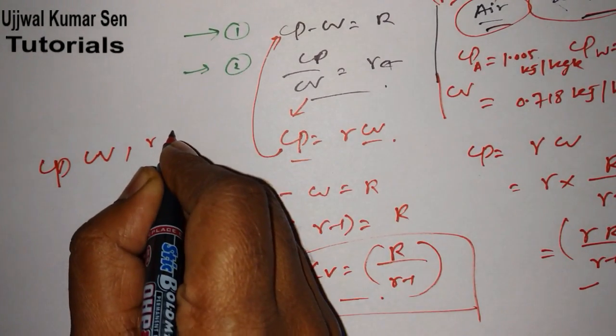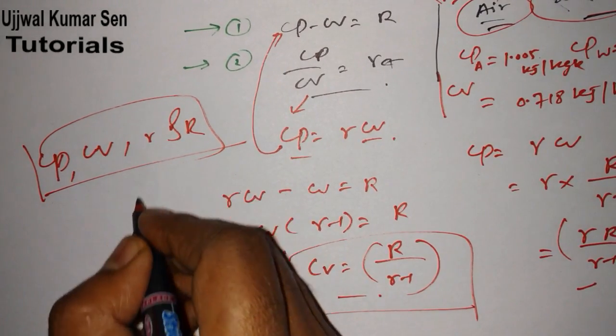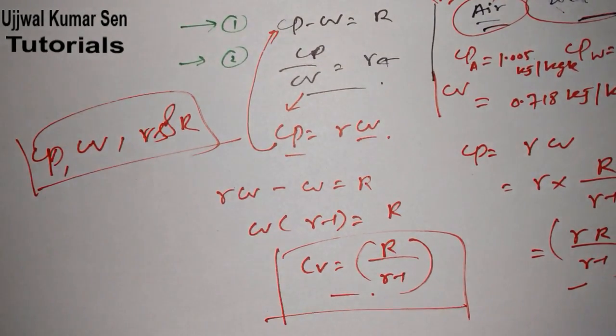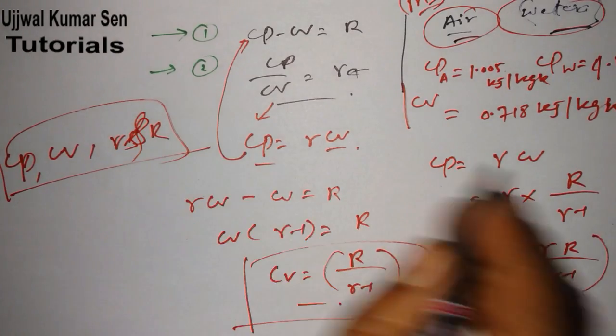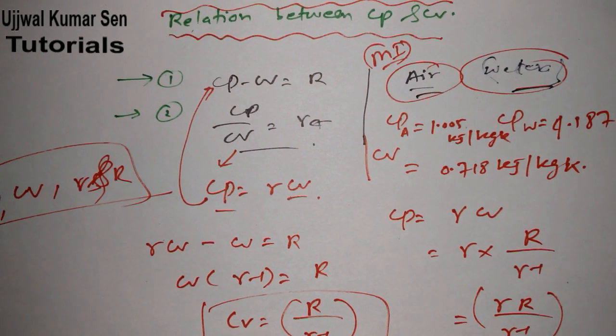These are the most important. If I am talking about relation between CP and CV, gamma and R, then these two relations are just most important, I must say. This is all about the relation between CP and CV. I hope you understand in very short period of time.